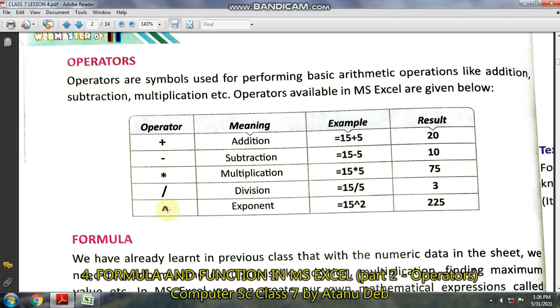So you have to press the shift key, then number 6 on the keyboard, then this symbol will appear. The meaning is exponent, which is actually the power. Like 2 to the power 3 is 2 into 2 into 2 which is 8. So 15 exponent 2 means 15 to the power 2 which is 225.